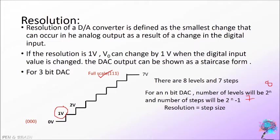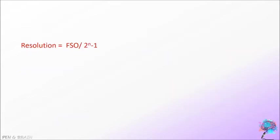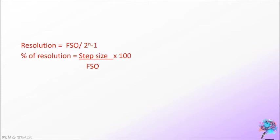Resolution can also be represented as the step size, or full scale output voltage divided by 2 raised to N minus 1. In this case, full scale output voltage is 7 volt and 2 raised to N minus 1 is 7, so resolution equals 1 volt. The equation for resolution is: Resolution equals full scale output voltage divided by 2 raised to N minus 1. The percentage resolution equals step size divided by full scale output voltage, multiplied by 100.